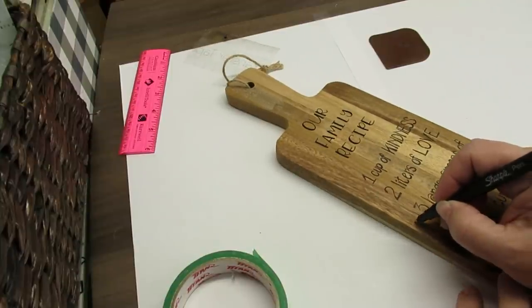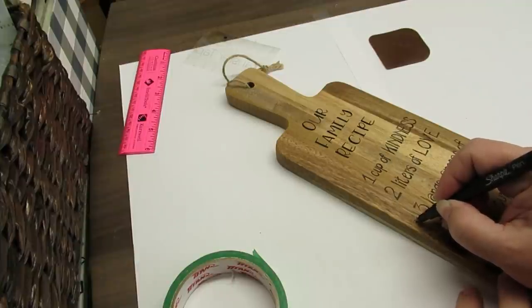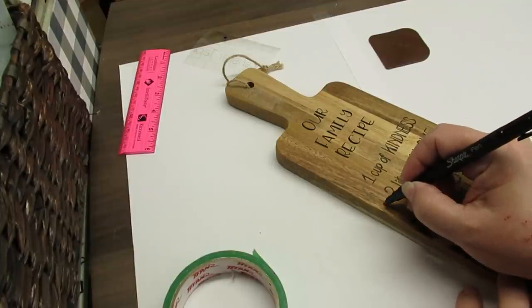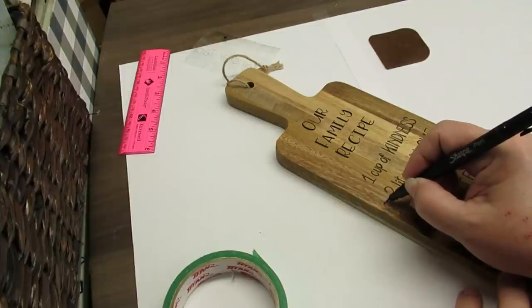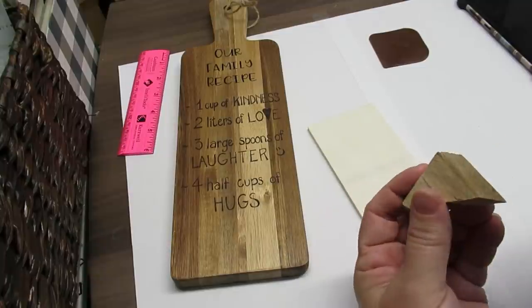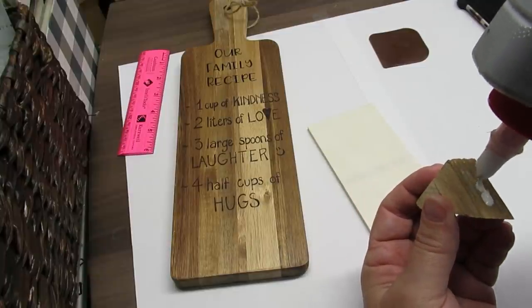I'm just going to do that which just kind of makes them into bullet points. And then I'm going to also make the V in the word 'love' into a heart and I also added a little happy face next to the word 'laughter'.